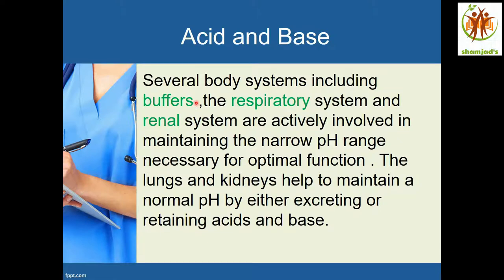For example, in alkalosis, the nature of the blood is alkaline. So we need acid for neutralizing this alkaline. The buffer will start to work at that time — it will increase the level of acid in the blood to neutralize the alkalosis. Similarly, in the case of acidosis, the nature of the blood is acidotic, so we need alkali to neutralize the pH. The buffer will raise the level of alkaline to neutralize the pH.